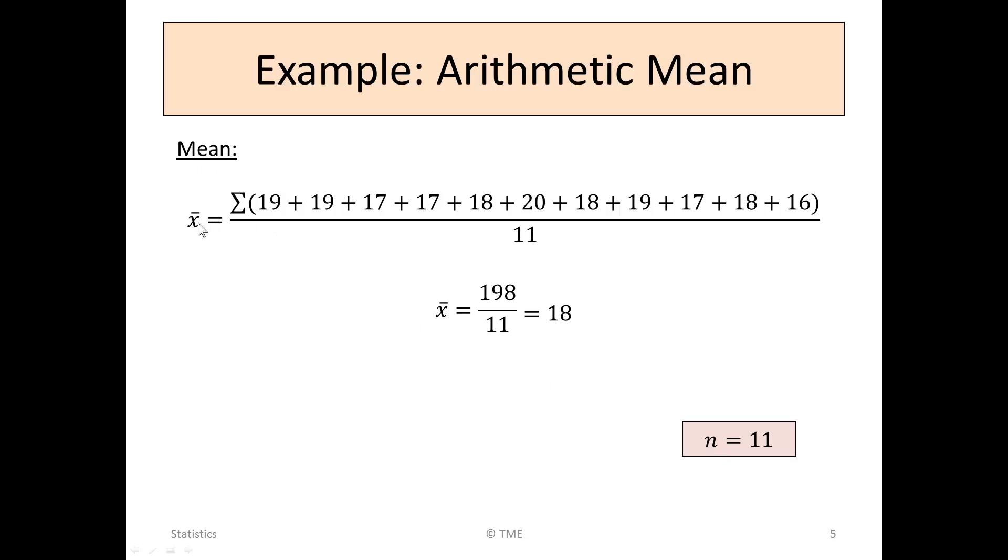So to get the mean, we say x bar is equal to the sum of 19 plus 19 plus 17, all the ages, divided by 11. This turns out to be 198 divided by 11, or 18 years of age. And that's our average.